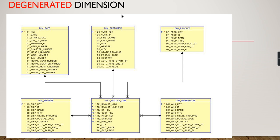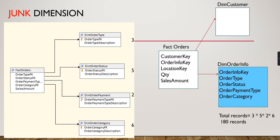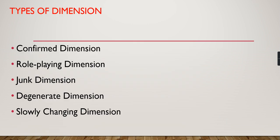So we have seen the different dimension types: conformed, role-playing, junk, and degenerated. There is one more important type — slowly changing dimensions — which will take a couple more minutes, so that will be covered in an upcoming video. If you liked this video, hit the thumbs up button and comment below with any queries. Remember: data is your asset.